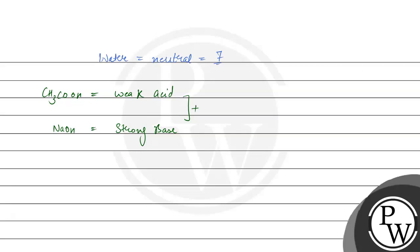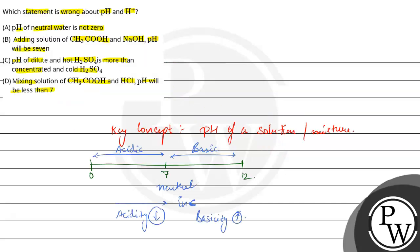So if we add the solution, the solution will be slightly basic because of the strong base. That means the pH will be greater than 7, so this is incorrect. Our correct answer will be B. Let's also explain C and D.